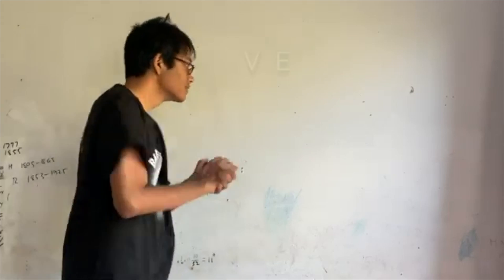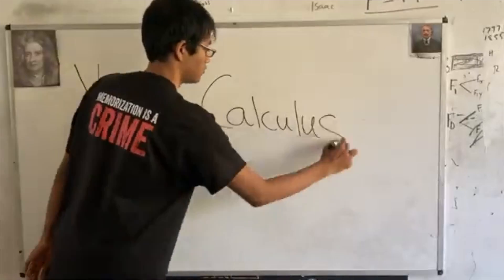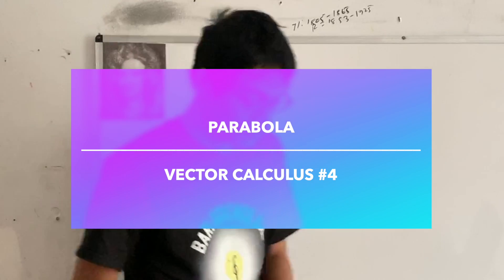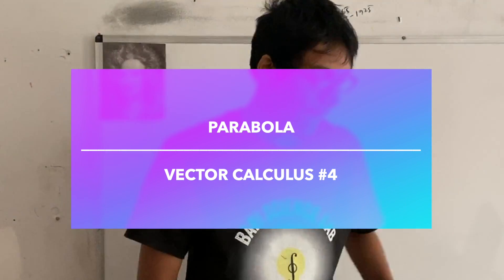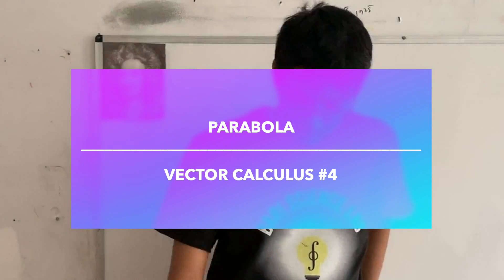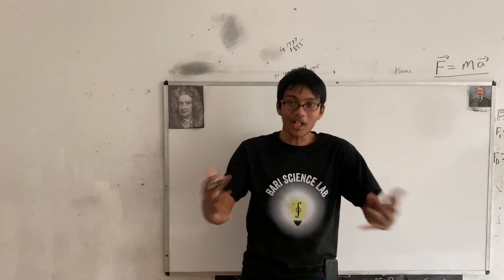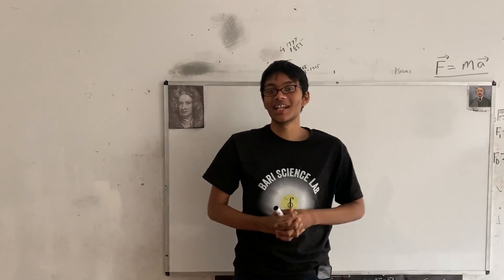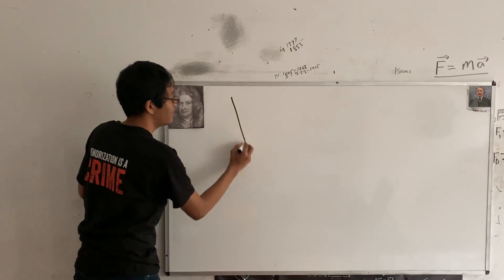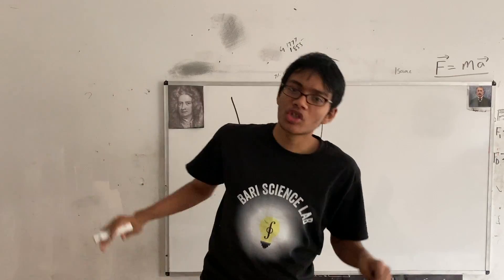Welcome to vector calculus. Our most basic parabola — the happy face looking one — is a great place to start. Today we're looking at the parabola, an amazing conic section with some amazing properties. This right here is a parabola.